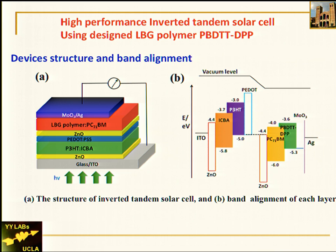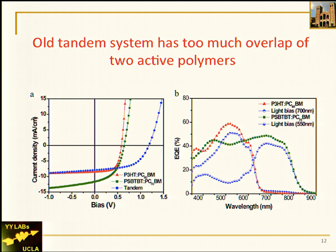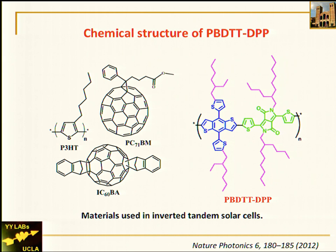Here is the tandem solar cell band structure. The trick is forming a metallic interconnecting layer so that you can separate the front cell and the back cell. The front cell uses P3HT, a wide-bandgap polymer. The back cell has been the limiting factor for tandem solar cell efficiency. The problem is too much spectral overlap — looking at the two blue curves, the two materials have much stronger overlap in the middle, significantly reducing the photocurrent if we use those two materials.